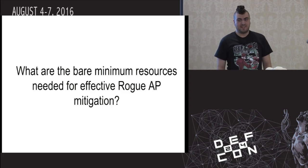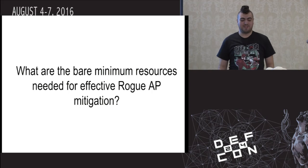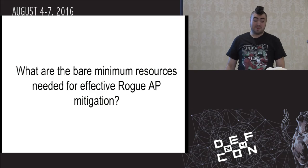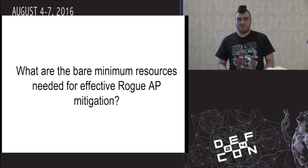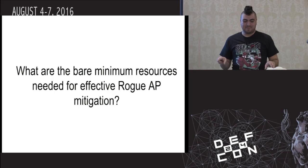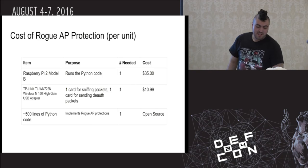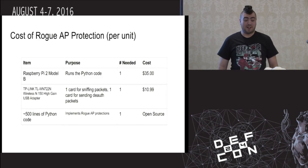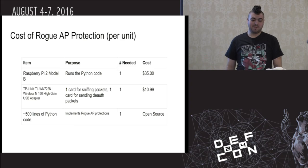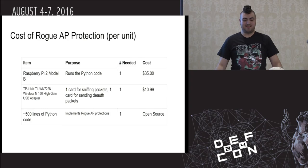So what are the bare minimum resources needed for effective rogue AP mitigation? If you have to run an open Wi-Fi network — and we actually did this at B-Sides earlier in the week — using the algorithms we just described, you can do this with just a Raspberry Pi, about 500 lines of Python code, and a cheap $10 TP-Link adapter. That should pretty much cover it.